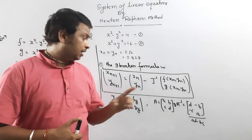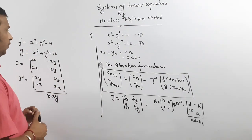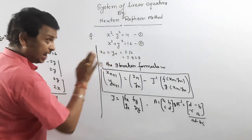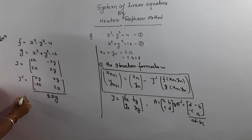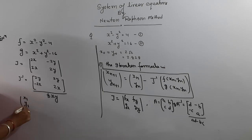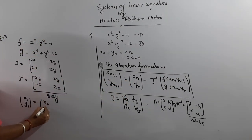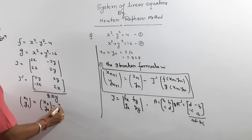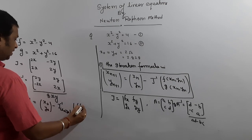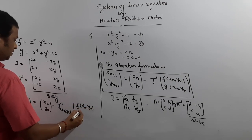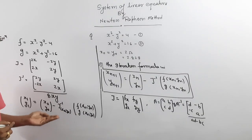One important thing: J inverse is calculated for each and every point. Now I will go for the solution. We have x0 and y0, so we calculate the first iteration to get x1 and y1. x1, y1 equals [x0, y0] minus J inverse at (x0, y0) multiplied by [f(x0, y0), g(x0, y0)]. Just put the values and calculate x1 and y1.